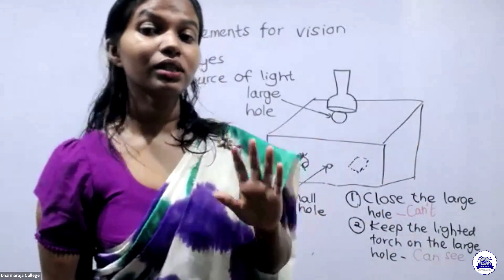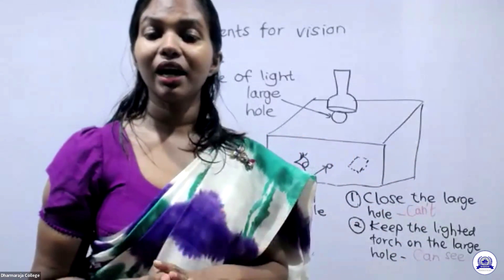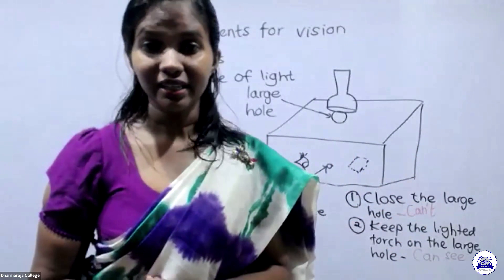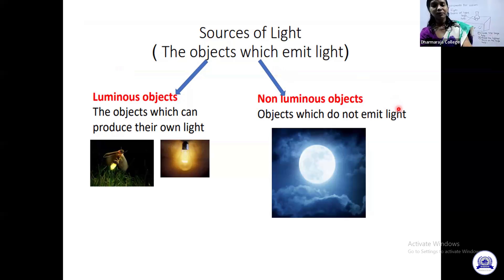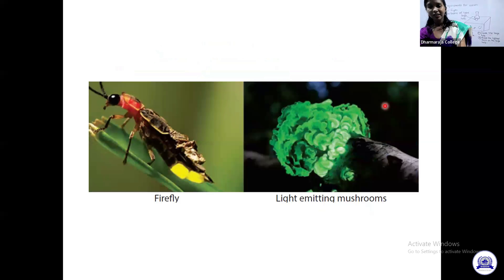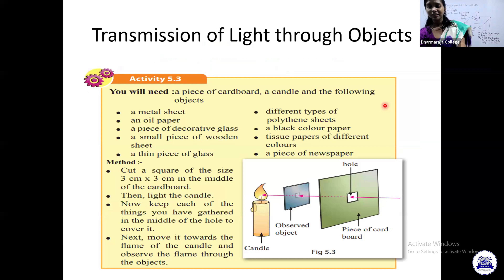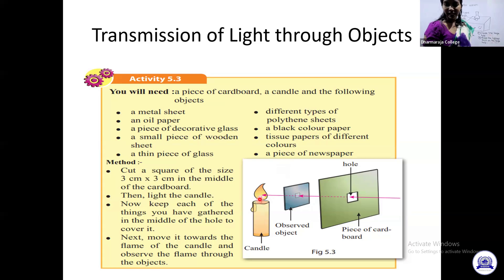There are luminous artificial objects as well, like the bulb — it is made by man and is artificial, but still it produces its own light. Then there are light sources like the moon. Even though the night sky is lighted by the moon, the moon is always getting its light from the sun, so it never produces its own light. Because of that, moons and planets are considered non-luminous objects — they cannot emit their own light.